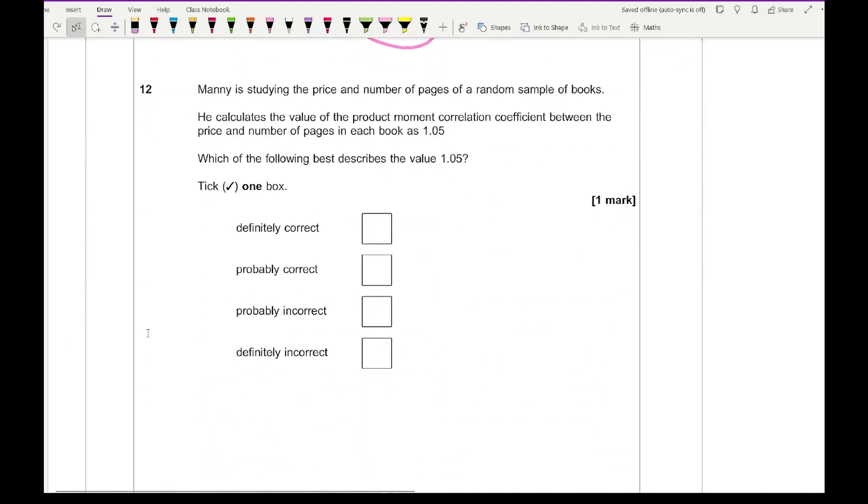For question 12, it says that Manny is studying the price and the number of pages of a random sample of books. He calculates the value of the product moment correlation coefficient between the price and the number of pages in each book is 1.05. Which of the following best describes the value of 1.05? The only possible answer you should be writing is that it's definitely incorrect. The reason is because when you're looking at the product moment correlation, your values should be between minus 1 and 1. Him having a value of 1.05 means that he has definitely budged up that calculation.